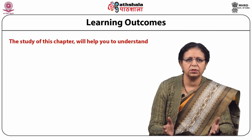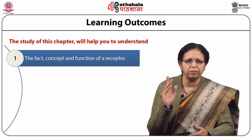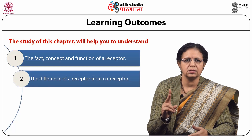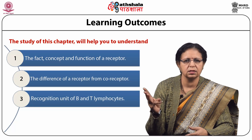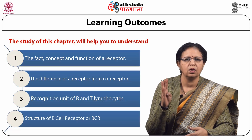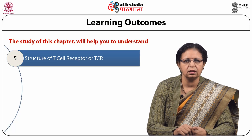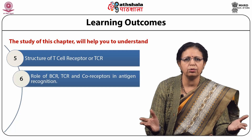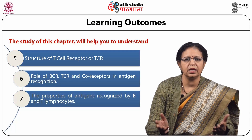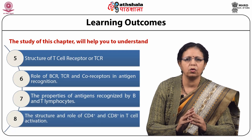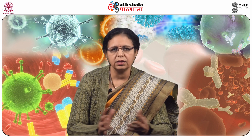The study of this chapter will help you understand the concept and function of the receptor, the difference of a receptor from a co-receptor, recognition units of B and T lymphocytes, structure of BCR and TCR, role of BCR, TCR and co-receptors in antigen recognition, properties of antigens recognized by B and T lymphocytes, and the structure and role of CD4 and CD8 in T cell activation.